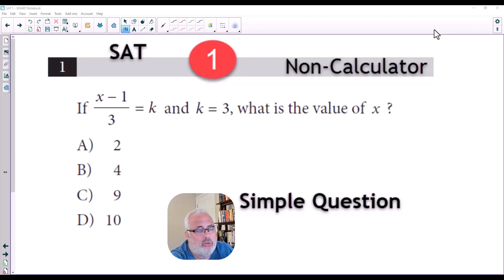X minus 1 over 3 equals K. And they also give us the value for the variable K, which is 3. And they said, find the value of X.